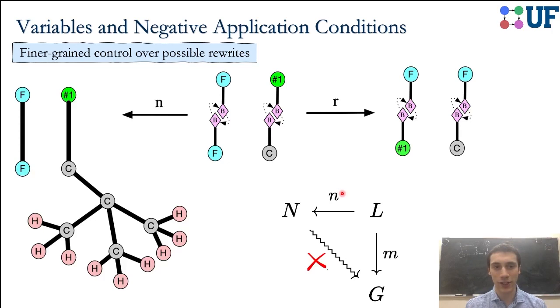Furthermore, negative application conditions is extra data that you can give to your rewrite rule. This is the L of a rewrite rule. If we also specify this N pattern, which is supposed to say, this is forbidden context. If you have this context, actually don't do the rewrite rule. That is formalized by saying for a given match, if there exists a triangle like this that the functions actually commute, then you're not allowed to perform the rewrite.